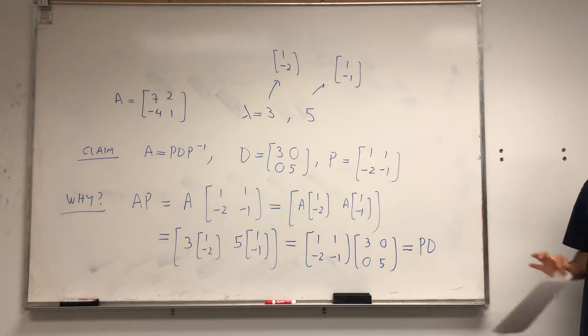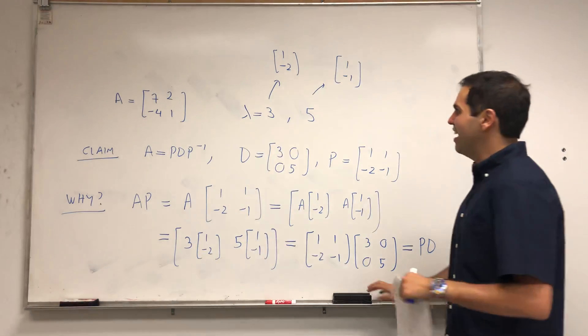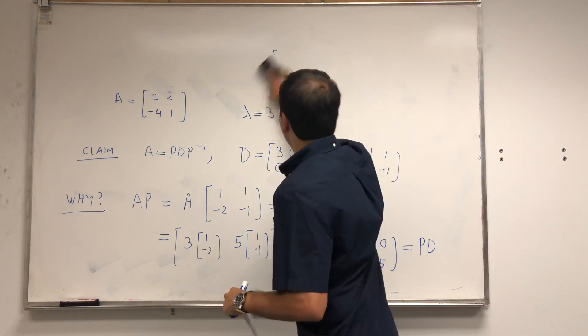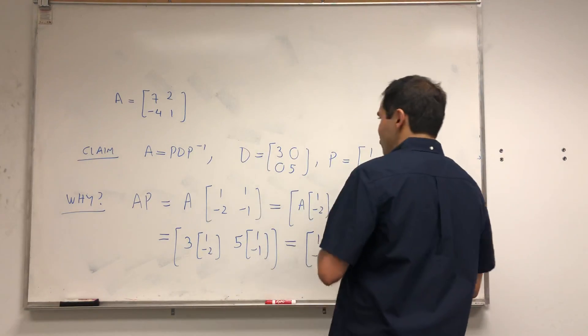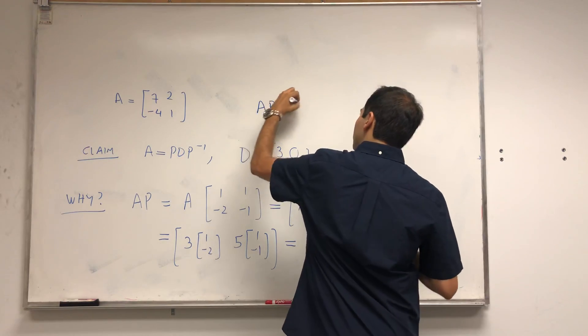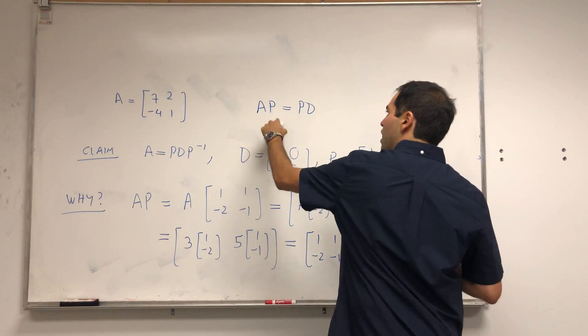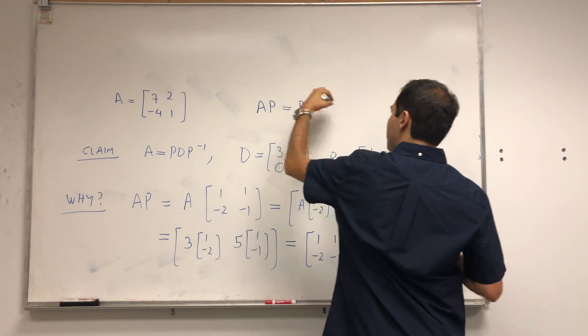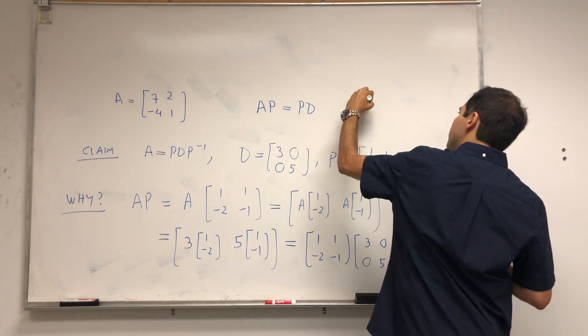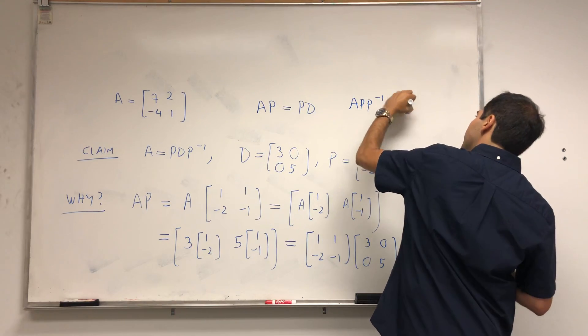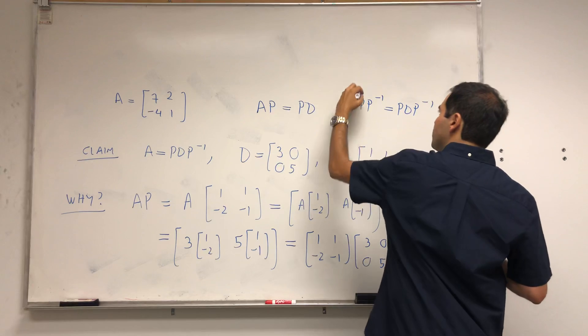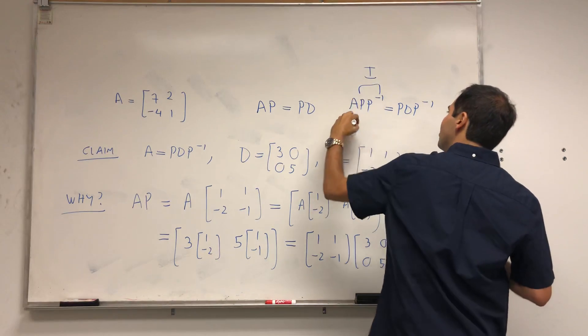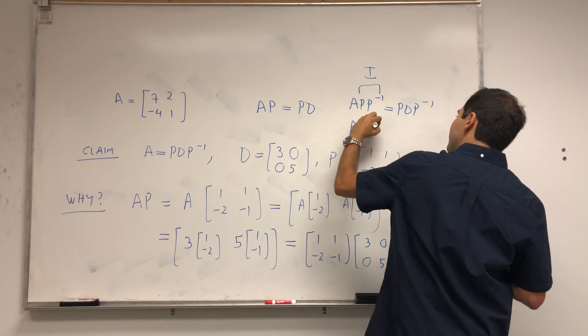So it's AP equals PD. And so what do we have? We have AP equals PD. And just right multiply by P inverse. So AP P inverse is PD P inverse, and this is the identity. So A equals PDP inverse.